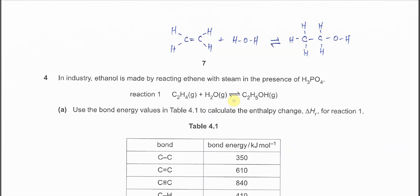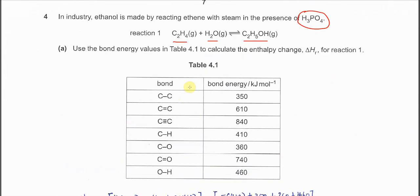Question 4, Part A. The reaction is between ethylene with H2O to form ethanol. This is hydration because it involves the addition of H2O, and the catalyst used is H3PO4. The bond energy is given in this table, and you need to calculate the delta Hr for this reaction.